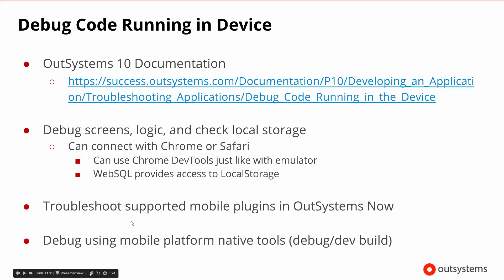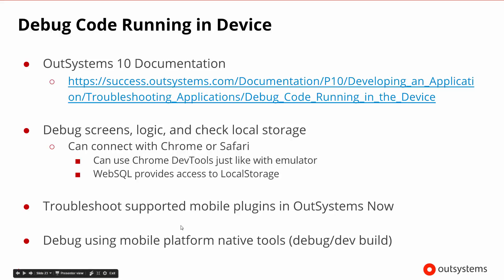There are also other types of problems that can come up that we may need to debug. If we're working with mobile plugins — ones that are supported by OutSystems and built in — we could go ahead and begin troubleshooting or debugging with OutSystems. If you've created your own plugins or want to get down to the native code level because you're having some sort of crash, you need to create a debug or dev build of your mobile app and then use something like Xcode or Android Studio to see that information.